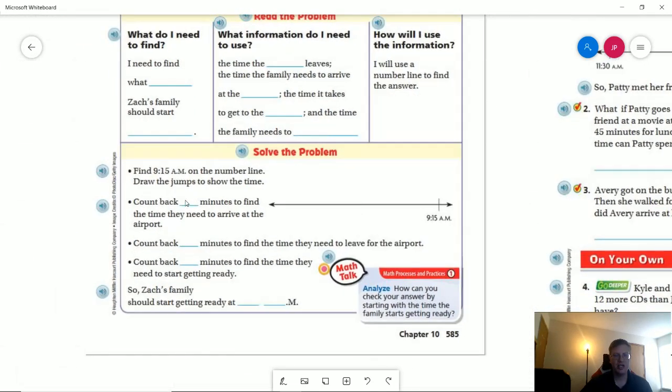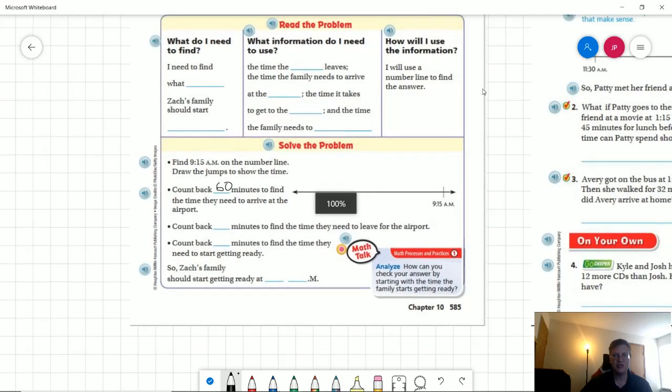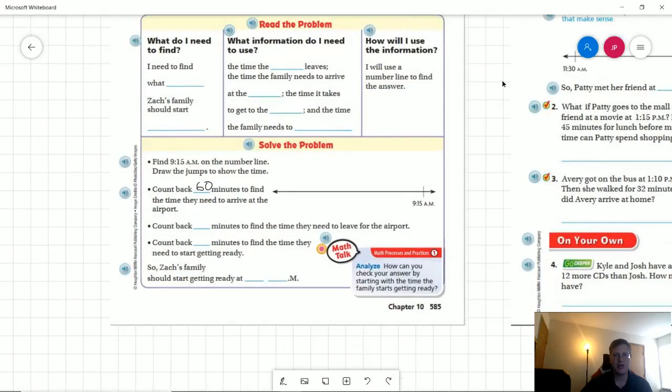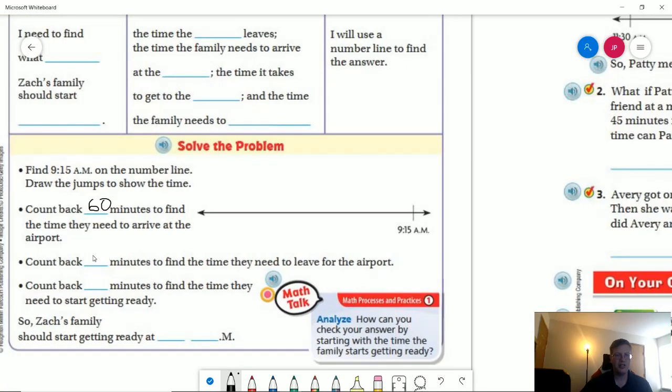We're going to count back 60 minutes to find out what time they need to arrive at the airport. We are going to count back the amount of time that they need to get to the airport, which I believe was 15 minutes. So 15 minutes for the airport and getting there and 30 minutes to find the time that they need to start getting ready because it's going to take them 30 minutes to get ready. So what I'm going to do is I'm going to go ahead and count backwards 60 minutes. So 60 minutes is the length of one hour. So if I go ahead and take my first 60 minutes, I would change 9:15 to 8:15 a.m.